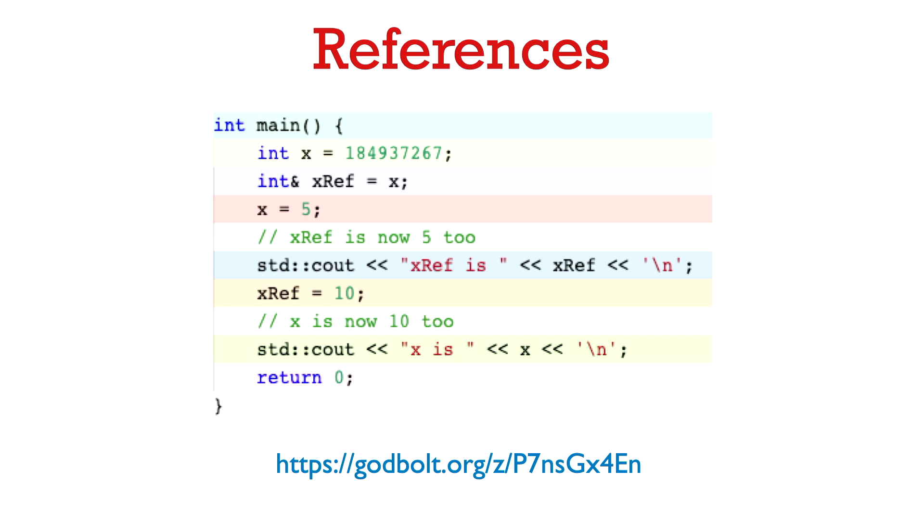So here's an example just showing that a change that we make to x affects xref and vice versa. If we change x to be 5, then xref is now 5 as well.